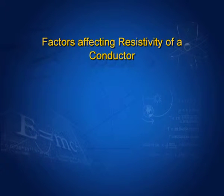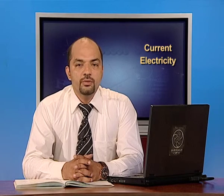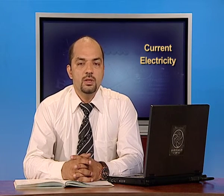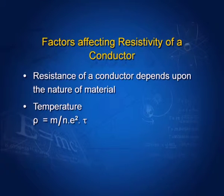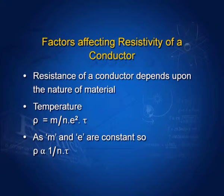Factors affecting the resistivity of a conductor: resistivity ρ = M/(Ne²τ). Here M and e are constant, so resistivity is inversely proportional to N (number of free electrons per unit volume) and τ (relaxation time).